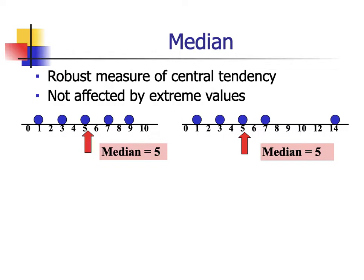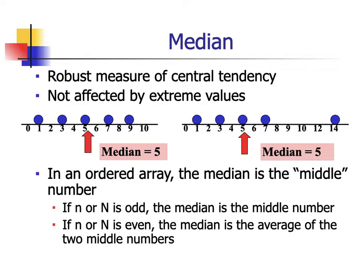There are two cases for determining the median depending on the number of data values. If N is an odd number, the median is simply the middle number. In our example with 5 data values (odd), we simply identify the value at the center. If the number of data values is even, the median is the average of the two middle numbers.